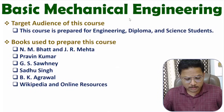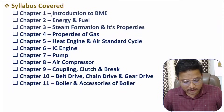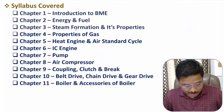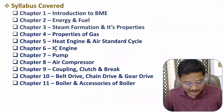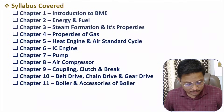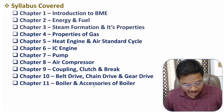In this course, there are 11 chapters in total. Chapter 1 is Introduction to BME. Chapter 2 is Energy and Fuel. Chapter 3 is Steam Formation and its Properties. Chapter 4 is Properties of Gas. Chapter 5 is Heat Engine and Air Standard Cycle. Chapter 6 is IC Engine. Chapter 7 is Pump. Chapter 8 is Air Compressor. Chapter 9 is Coupling, Clutch and Brake. Chapter 10 is Belt Drive, Chain Drive and Gear Drive. Chapter 11 is Boiler and Accessories of Boiler.